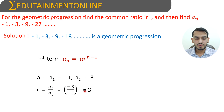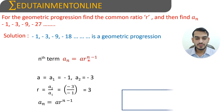A equals -1 and R equals 3. Substituting into the formula, the nth term is An equals -1 into 3 power N minus 1.